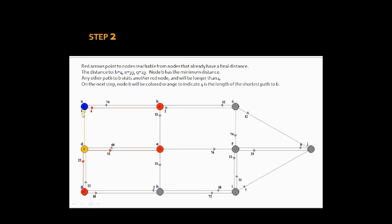Red arrows point to nodes reachable from nodes that already have a final distance. The distance to B is equal to 4, the distance to E is 23, and the distance to G is 23. Node B has the minimum distance, which is 4. Any other path to B visits another red node and will be longer than 4. On the next step, node B will be colored orange to indicate that 4 is the length of the shortest path to B.